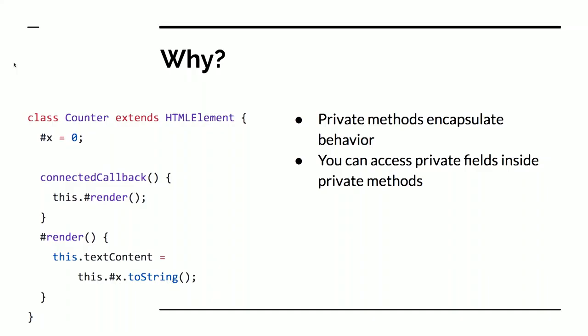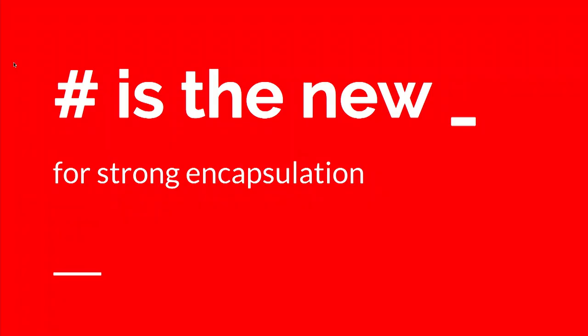Also, private fields and methods. What we decided was that you use a hash at the beginning of the name of a field or method inside a class. I can see an audience member shaking their head — I know some people really don't like the hash, but it's the best trade-off we could make. These things are often pretty difficult. You could think of hash as sort of the new underscore.